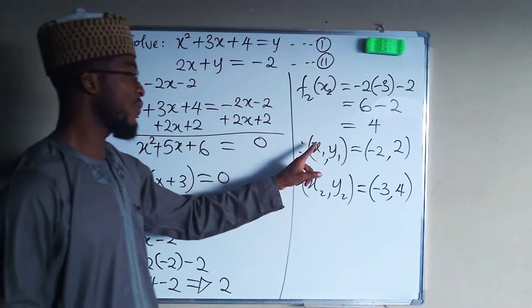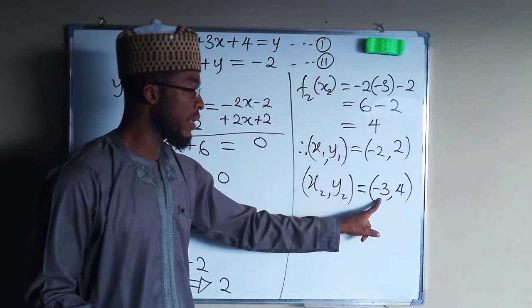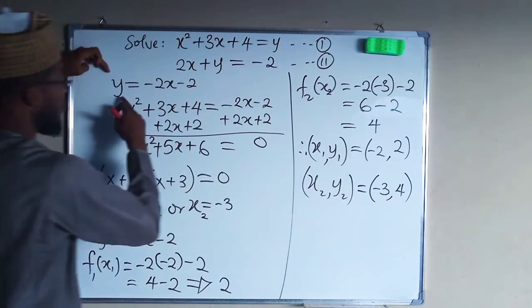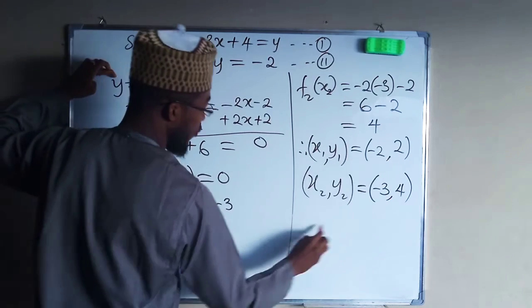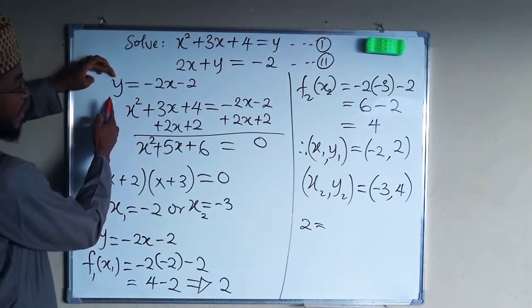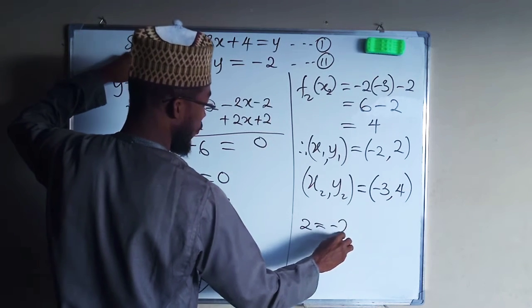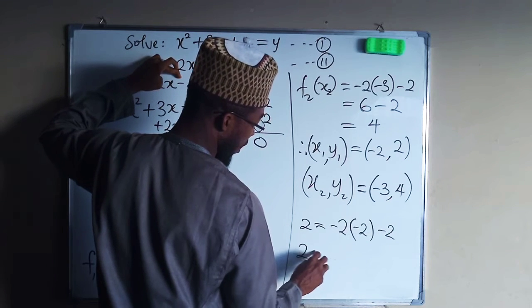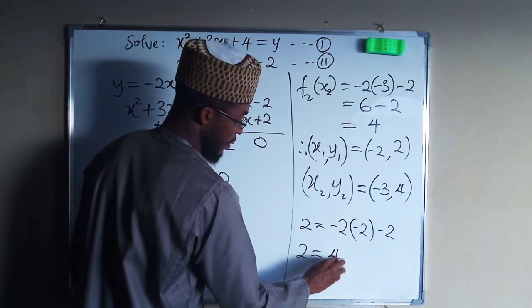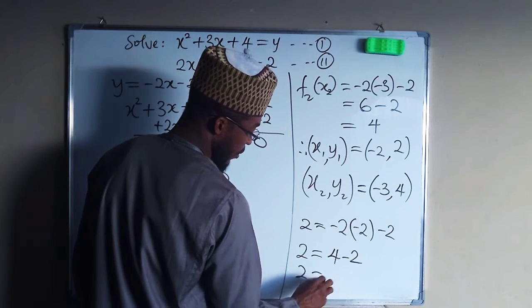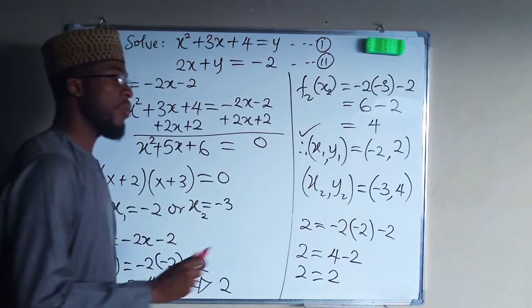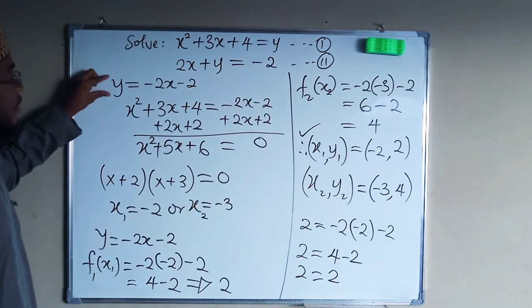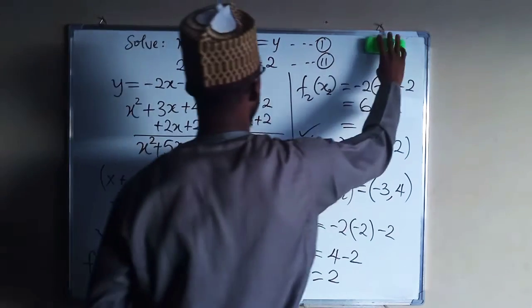Each variable has two values: x₁ and x₂ are negative 2 and negative 3, and y₁ and y₂ are 2 and 4. Testing the coordinate (-2, 2) in the equation y equals negative 2x minus 2: we get negative 2 times negative 2 minus 2, which is 4 minus 2 equals 2. The left side equals the right side, so this coordinate satisfies the equation and is a valid solution.